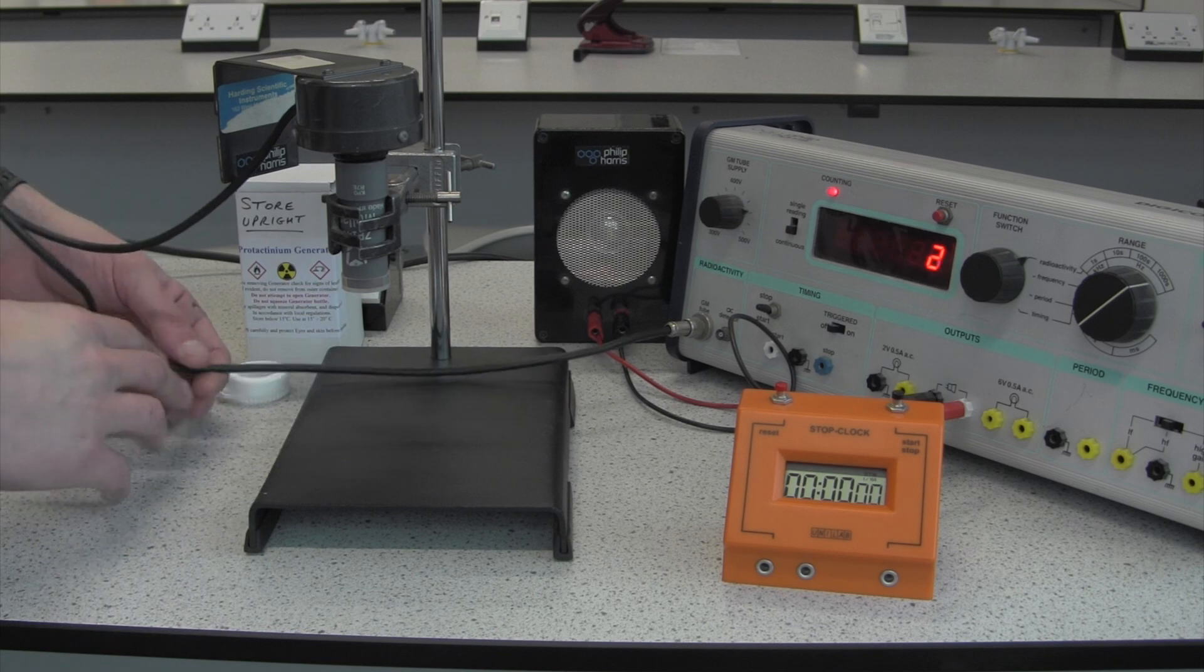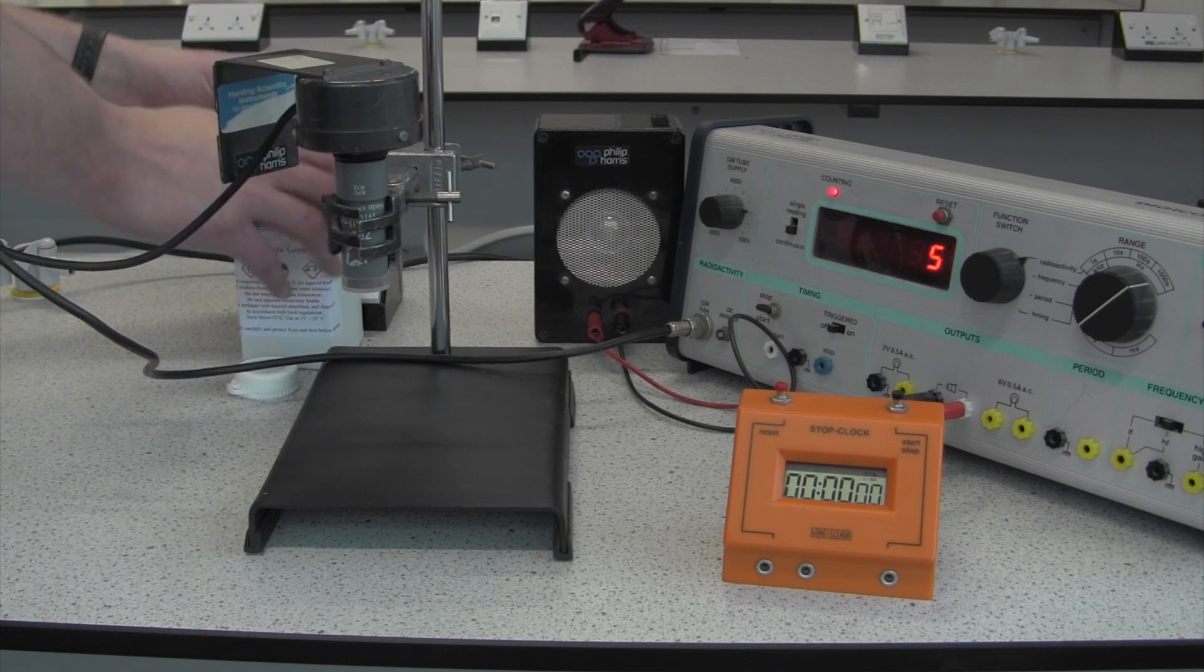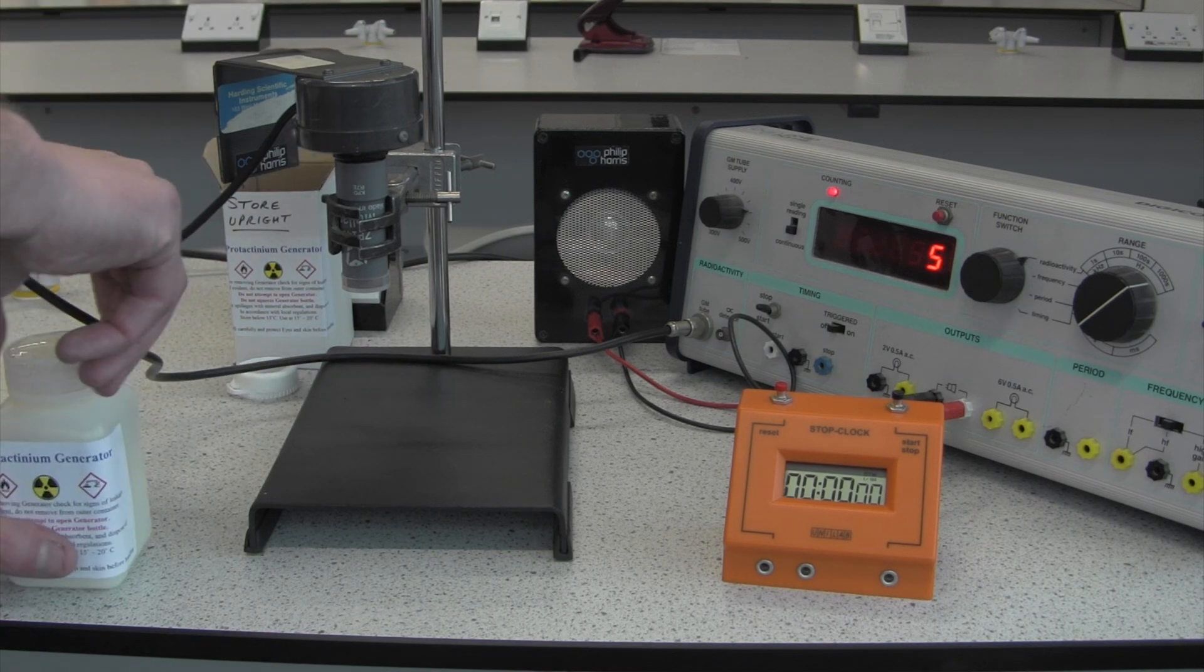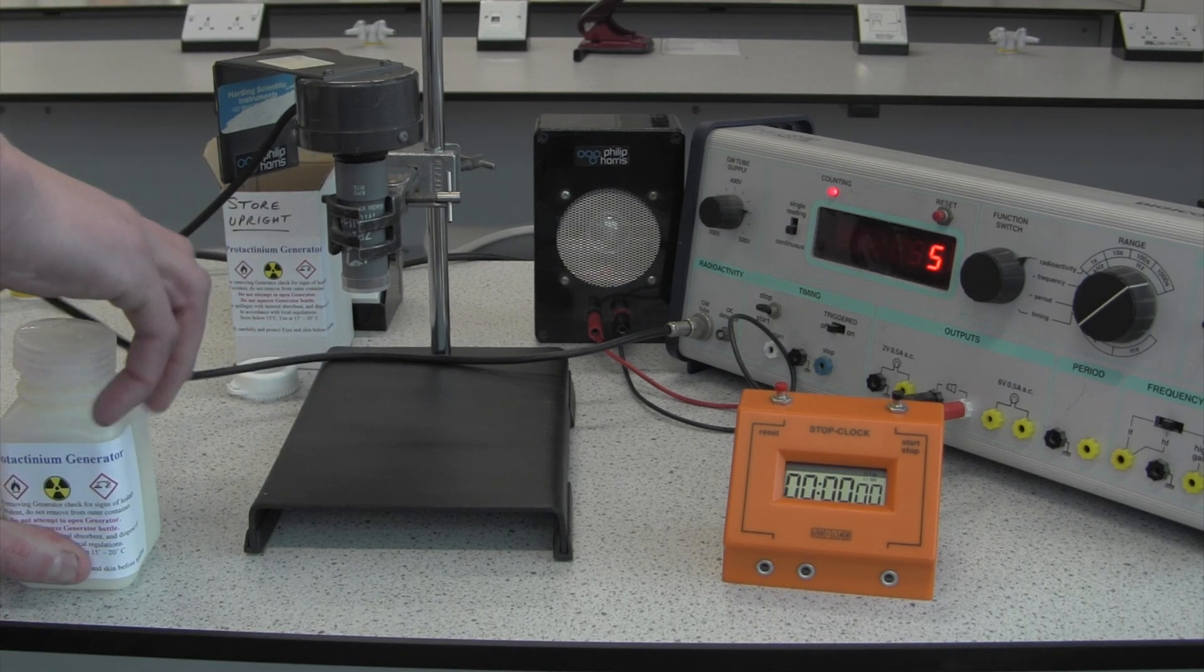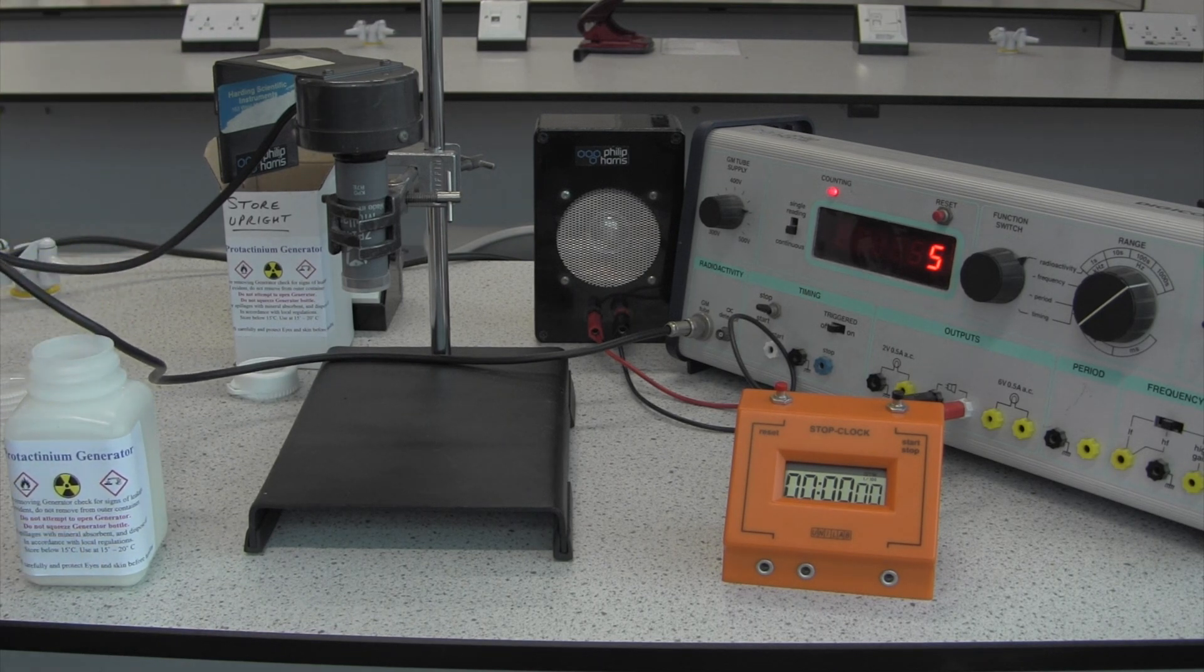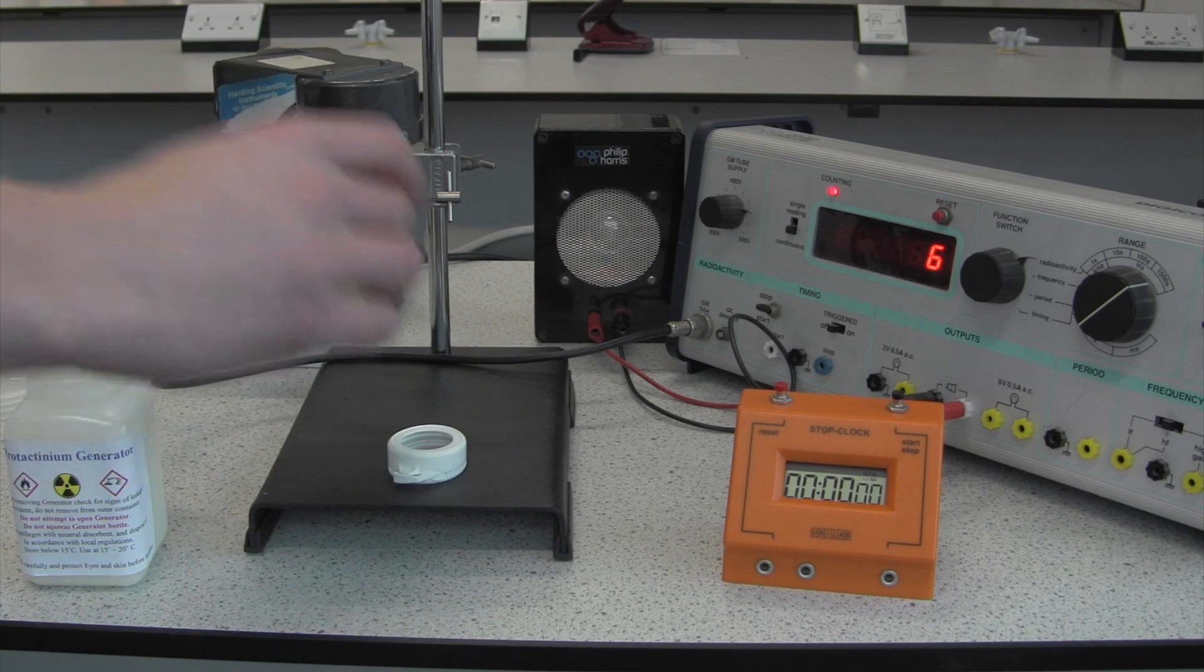We're going to position this Geiger-Muller tube in the position that our protactinium generator is going to be in. So if we take that out of the box, take the lid off, carefully remove it. And it comes with a little stand. It goes in the stand.